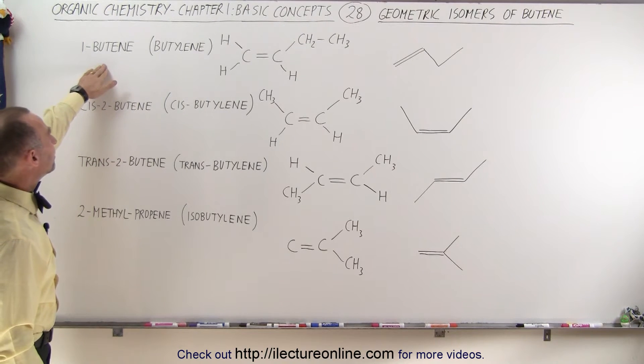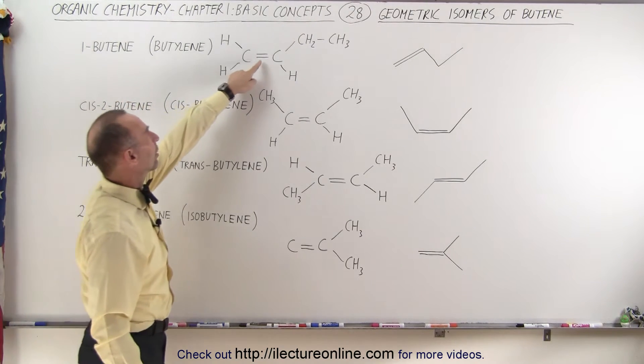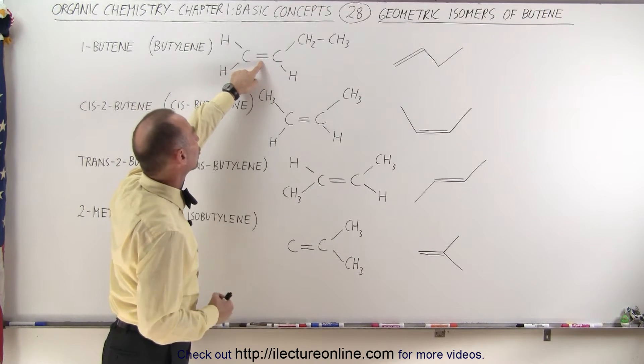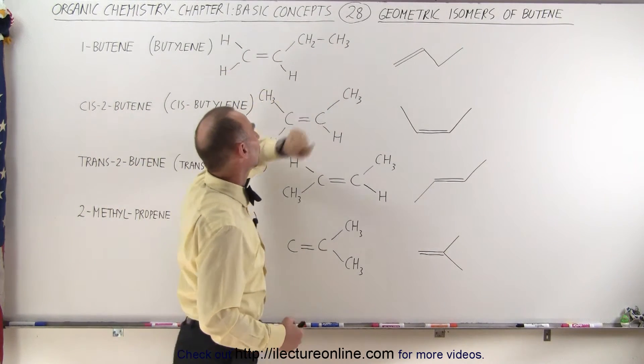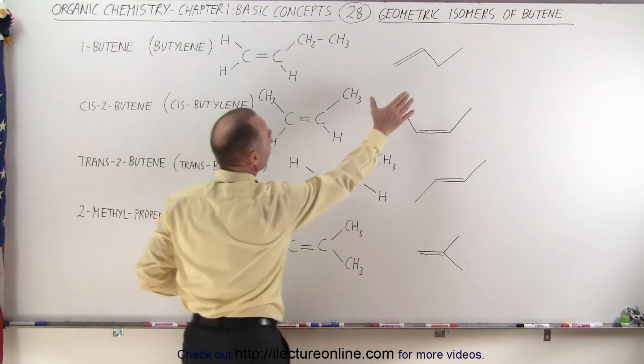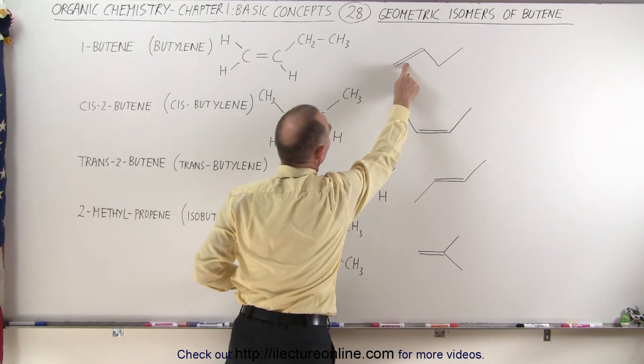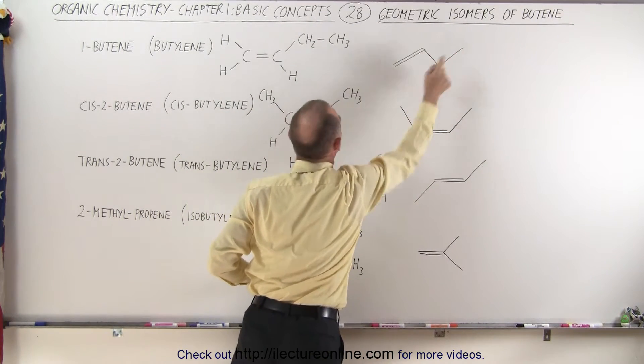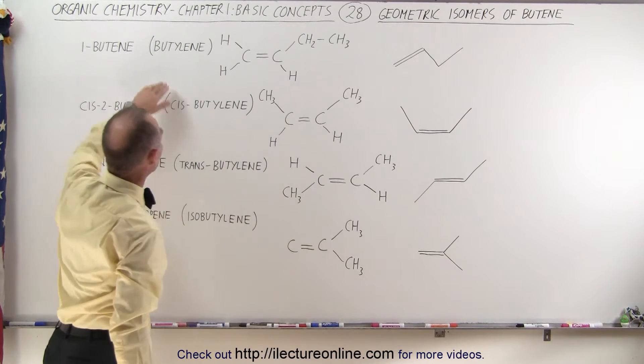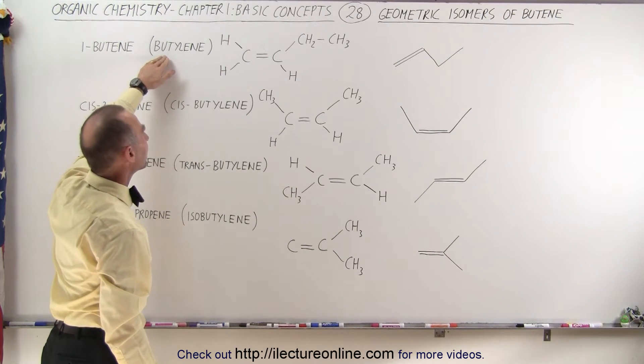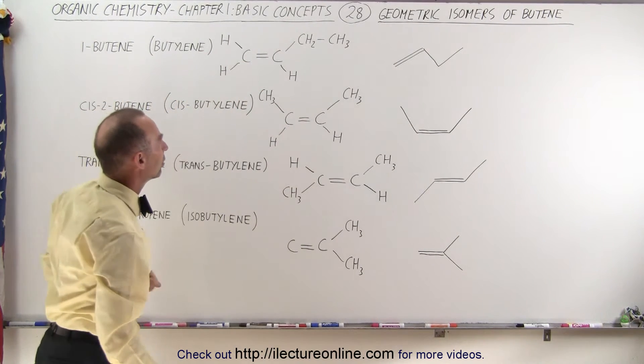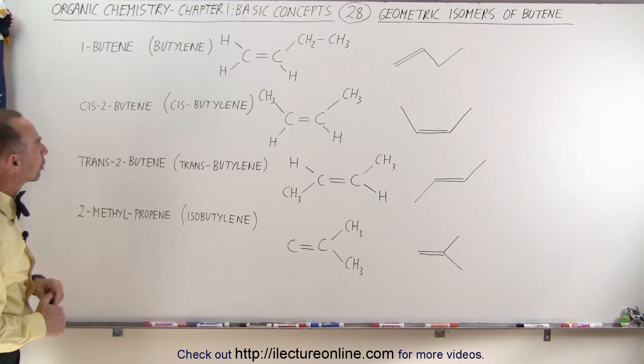Well, we have the 1-butene, which of course then has the double bond as the first bond in the chain. There's a chain of four carbons. We have a representation like this as well. Here's a double bond, one, two, three, four carbons. And notice the common name is also called butylene, and that's the general structure of the molecule.